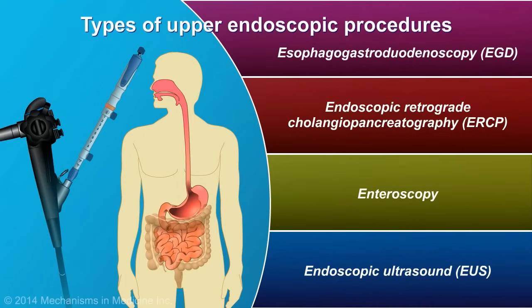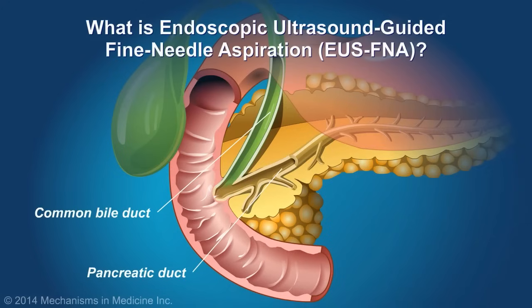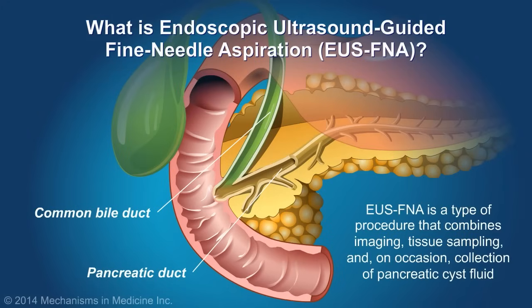Endoscopic ultrasound, or EUS, combines endoscopy with ultrasound, or echoendoscopy, to obtain detailed images of the digestive tract, including the pancreas and surrounding abdominal organs. Endoscopic ultrasound-guided fine needle aspiration, or EUS-FNA, is a type of procedure that combines steps involving imaging, tissue sampling, and on occasion, collection of pancreatic cyst fluid.